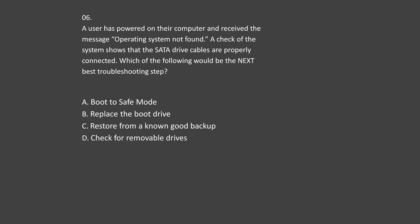Question number 6. A user has powered on their computer and received the message 'Operating System Not Found.' A check of the system shows that the SATA drive cables are properly connected. Which of the following would be the next best troubleshooting step? Option A: Boot to safe mode. Option B: Replace the boot drive. Option C: Restore from a known good backup. Option D: Check for removable drives.